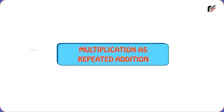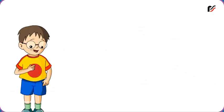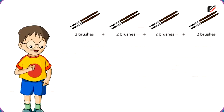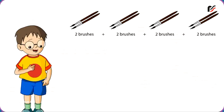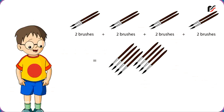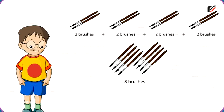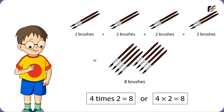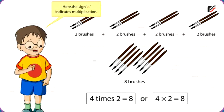Multiplication as Repeated Addition. Repeated addition of the same number can be done by multiplication. For example, 2 brushes plus 2 brushes plus 2 brushes plus 2 brushes is equal to 8 brushes. It can be written as 4 times 2 is equal to 8, or 4 into 2 is equal to 8. Here, the sign x indicates multiplication.